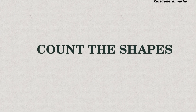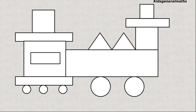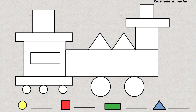Next we are going to count the shapes. Here they have given train pictures. So we are going to color and count the shapes. First we are going to do the circle shapes. Are you ready to count with me? 1, 2, 3, 4, 5. So how many circles? 5 circles.